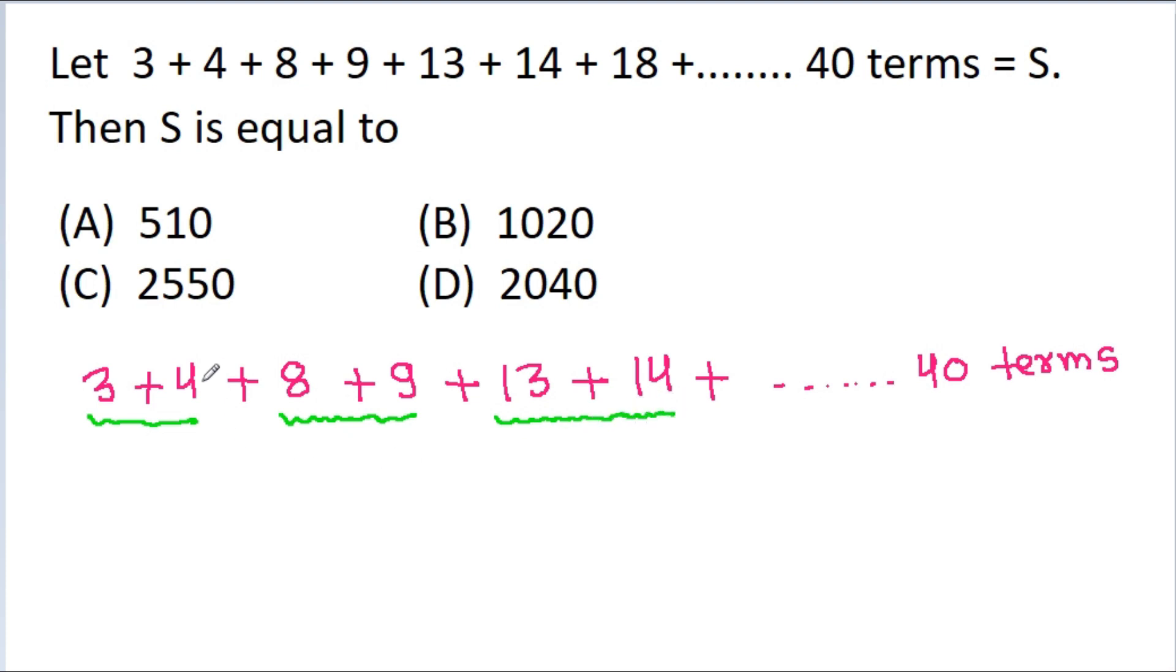And the difference between 4 and 8 is 4. The difference between 9 and 13 is also 4 and so on. So if we add 3 and 4, then we get 7. If we add 8 and 9, then it is 17. 13 plus 14 is 27.